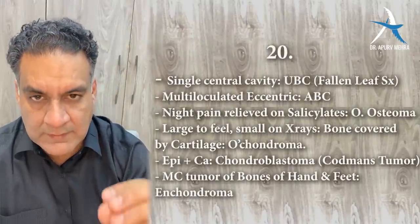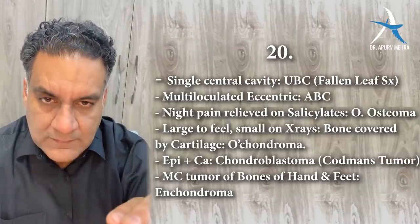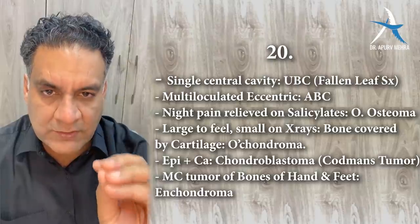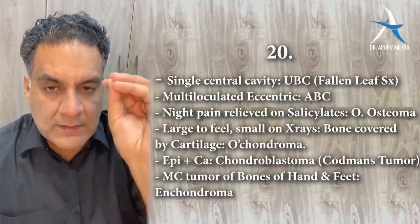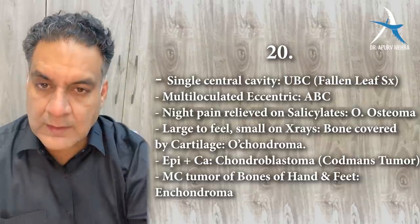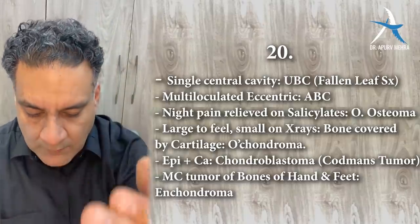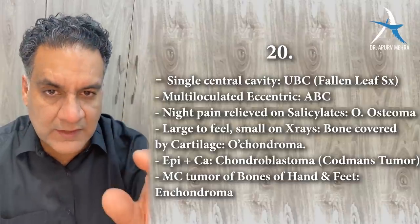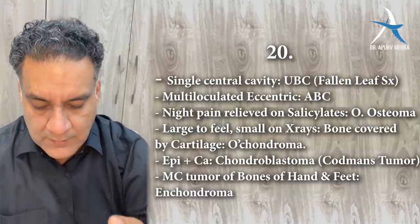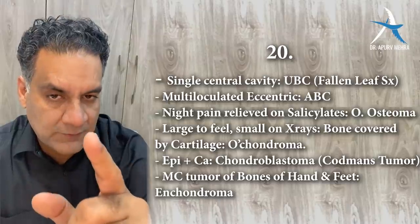Larger to feel, smaller on X-ray, bone covered with cartilage — osteochondroma. Epiphysis location with calcification — chondroblastoma, also called Codman's tumor (different from Codman's triangle). Most common tumor of bones of hand and feet — enchondroma. But the most common tumor of the hand overall is squamous cell carcinoma.